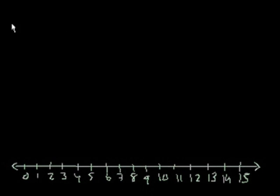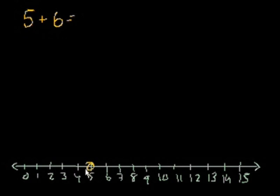Let's do a hard problem: 5 plus 6. You could pause the video and try this. The reason I say this is a hard problem is because the answer has more digits than you can count on your fingers. Let's start at the 5 and we're going to add 6 to it — 1, 2, 3, 4, 5, 6. We're at 11. So 5 plus 6 is equal to 11.